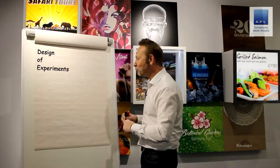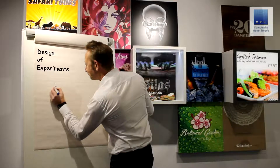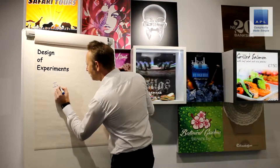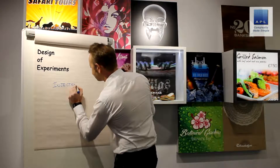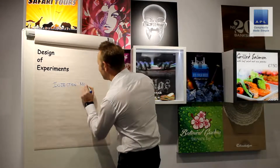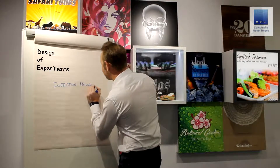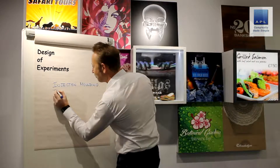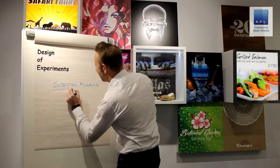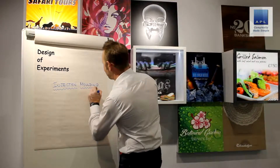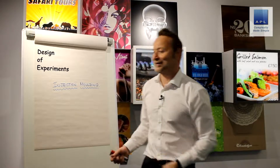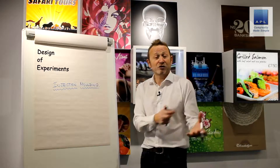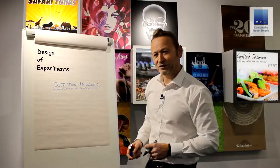Let me show you how complicated your processes are and what your technical people are trying to do. The example we're going to use is injection molding, but it doesn't really matter what the process is. This could be any technical process, any piece of machinery that's got settings, speeds, feeds, choices of material, etc. You've got to find the best settings — let's have a look at how complicated this problem is.